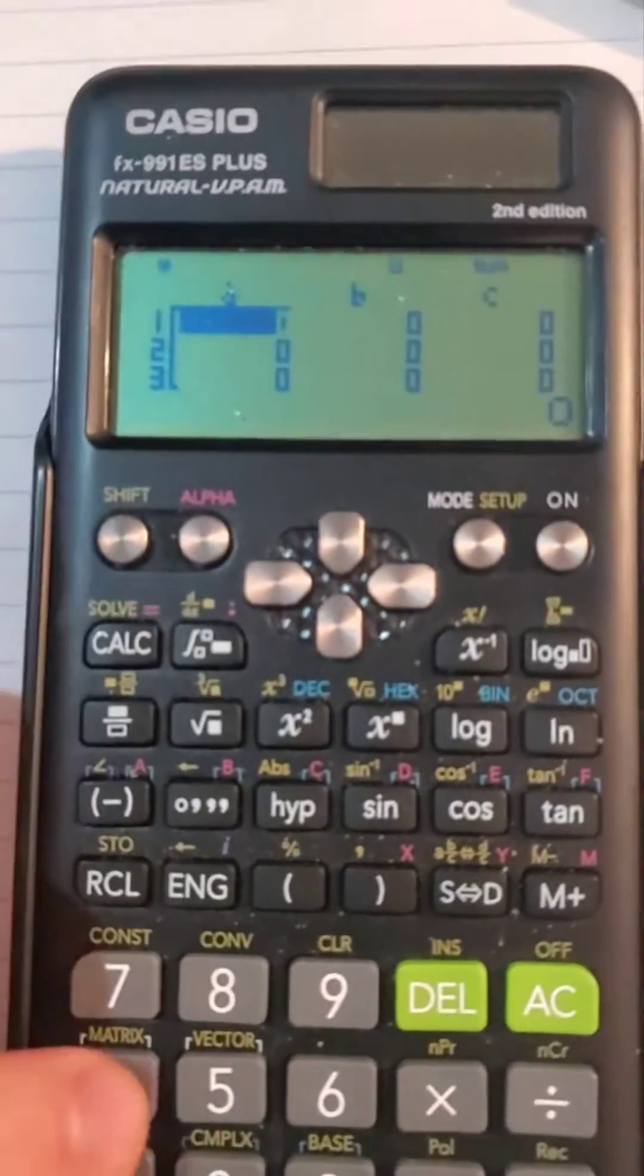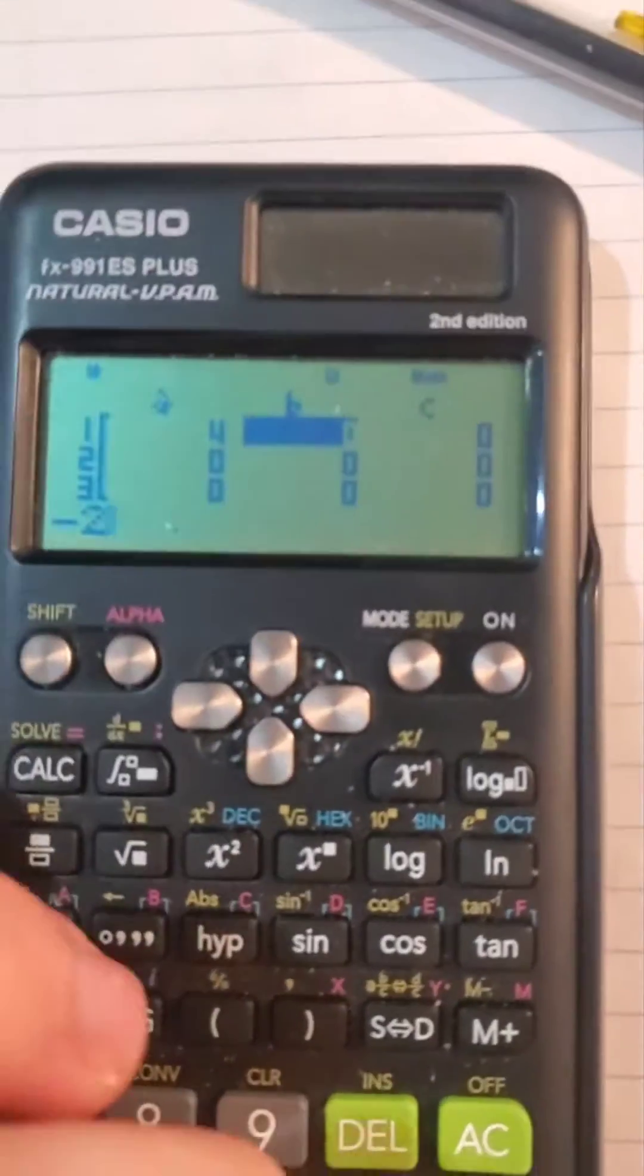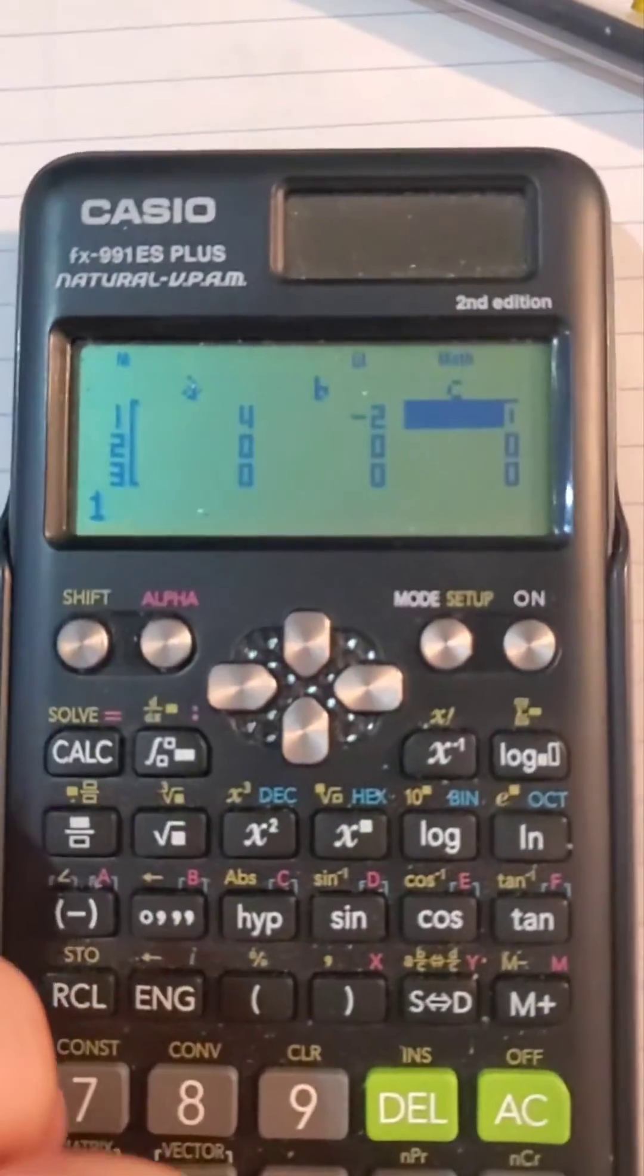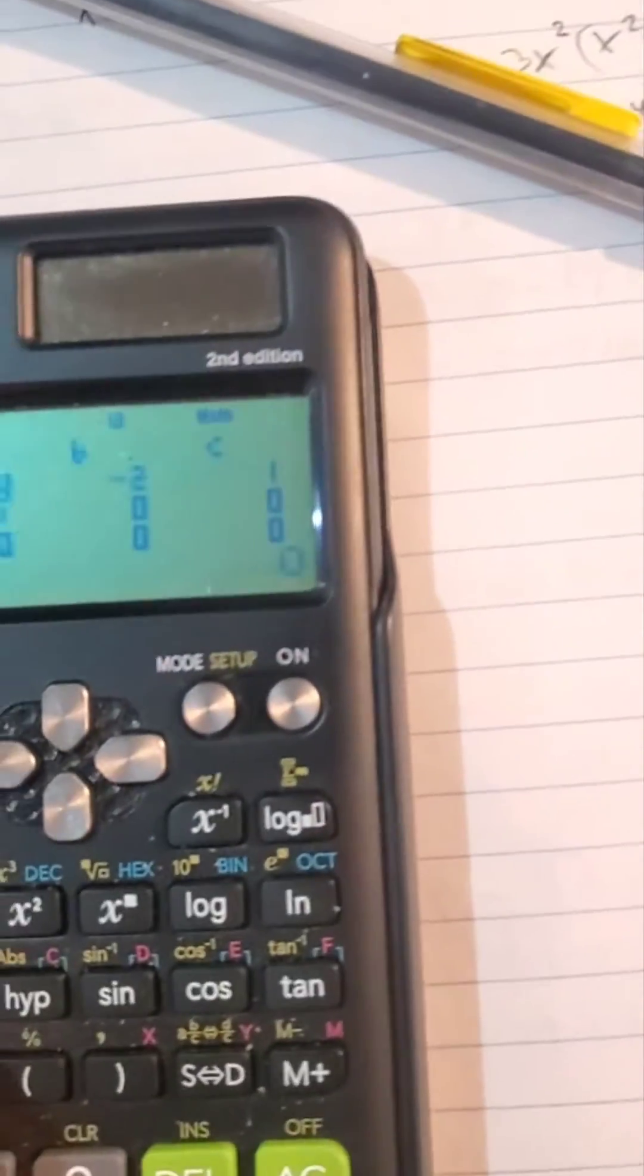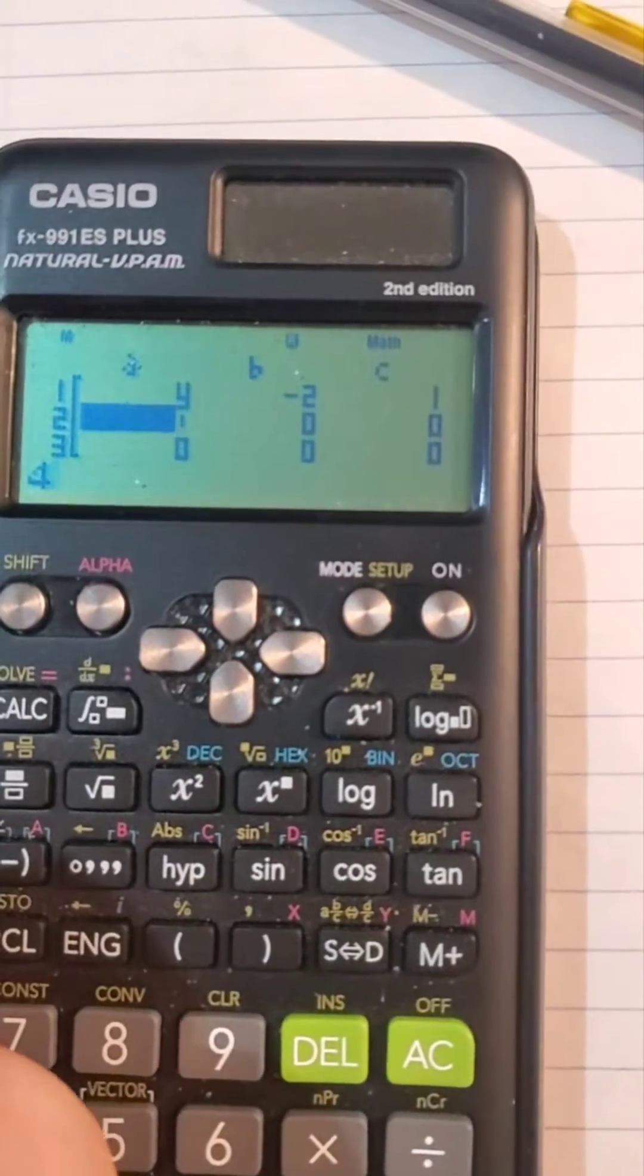And then we'll write 4, negative 2, 1, 4, and then every time you hit enter, it moves on automatically. It's like a tab.